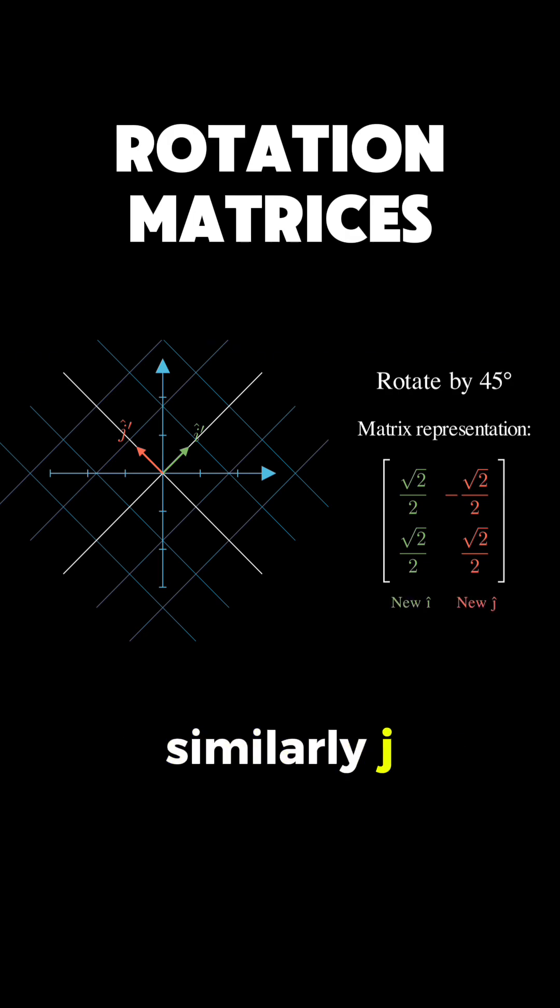Similarly, j, which started at 0 and 1, moves to negative sine of 45 degrees and cosine of 45 degrees.